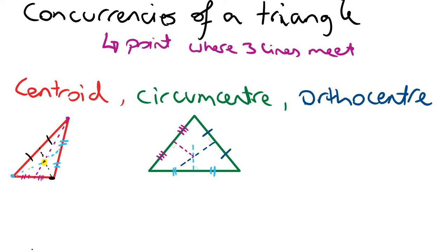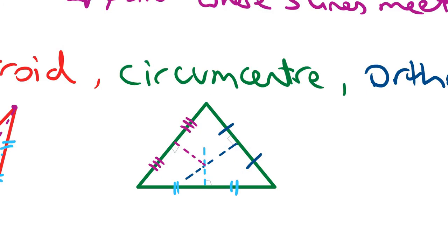The circumcentre of a triangle is the point at which the perpendicular bisectors of a triangle meet. Each of these lines here — the navy, the blue, and the purple — bisect the edges of the triangle at 90 degrees. So this point is the circumcentre.